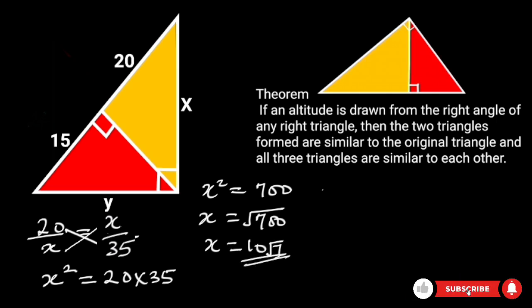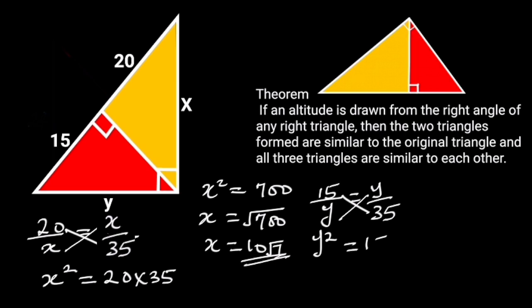Also, the proportionality of the corresponding sides of the red triangle and the given triangle is 15 over y is equal to y over 35. By cross multiplication, we have y squared is equal to 15 times 35.